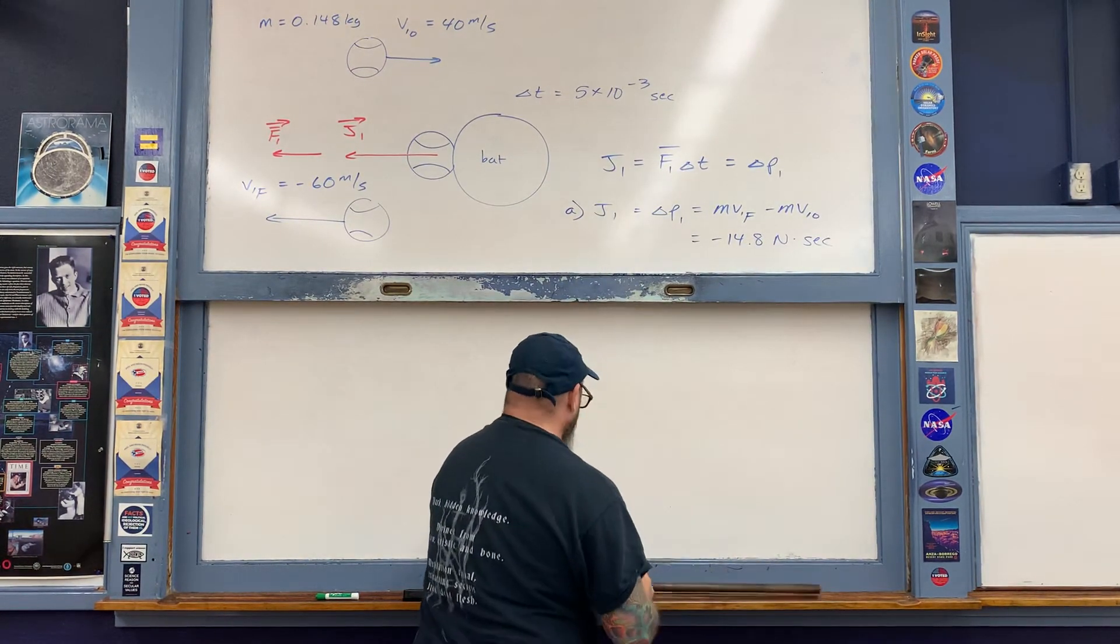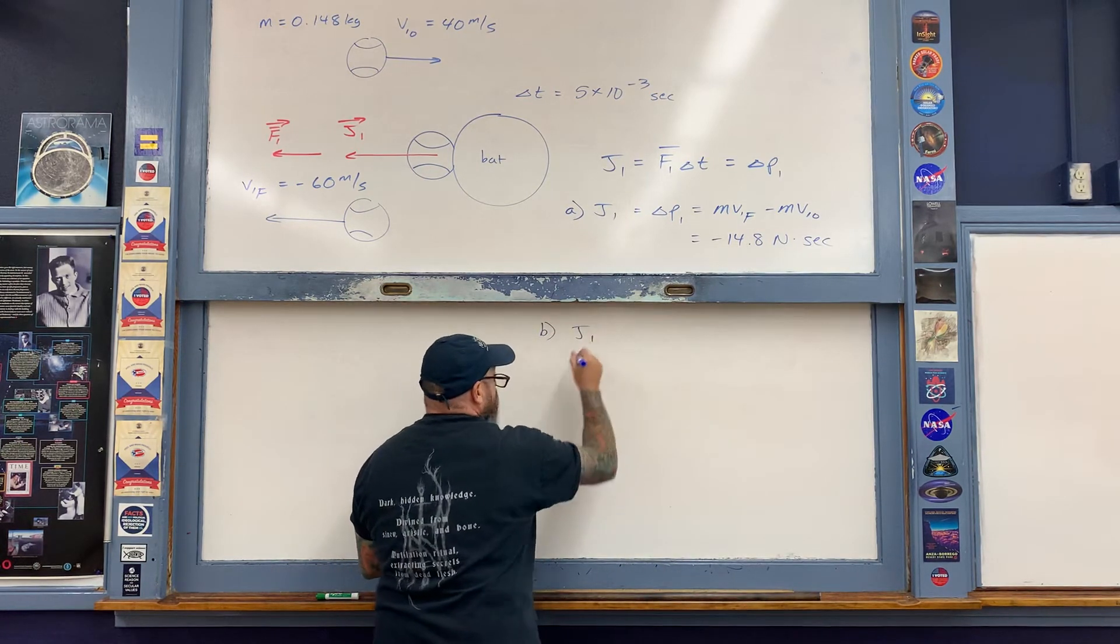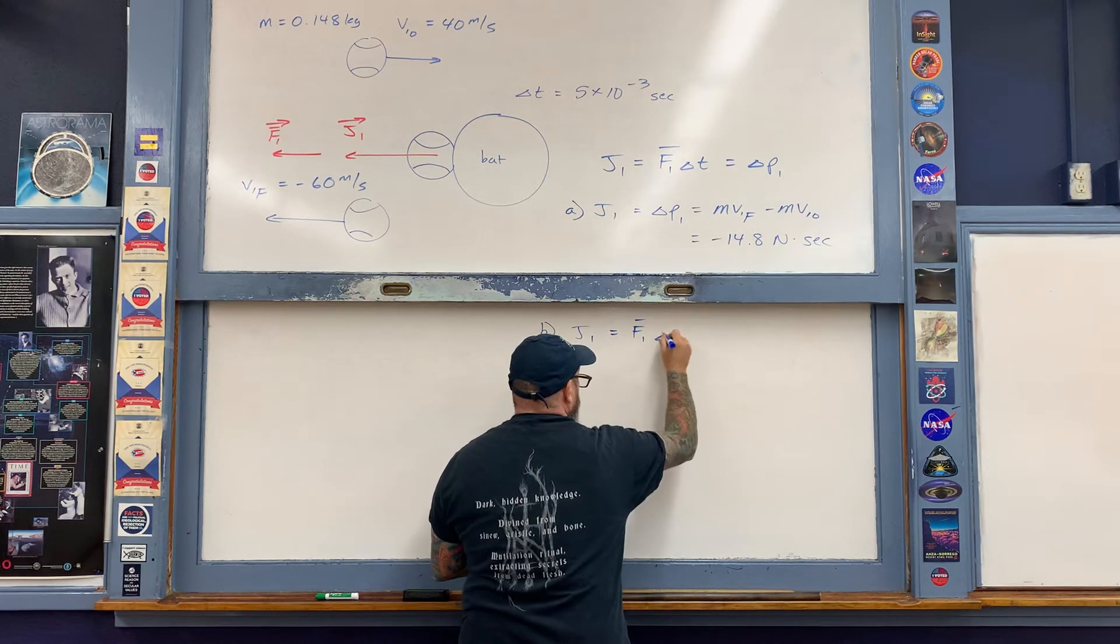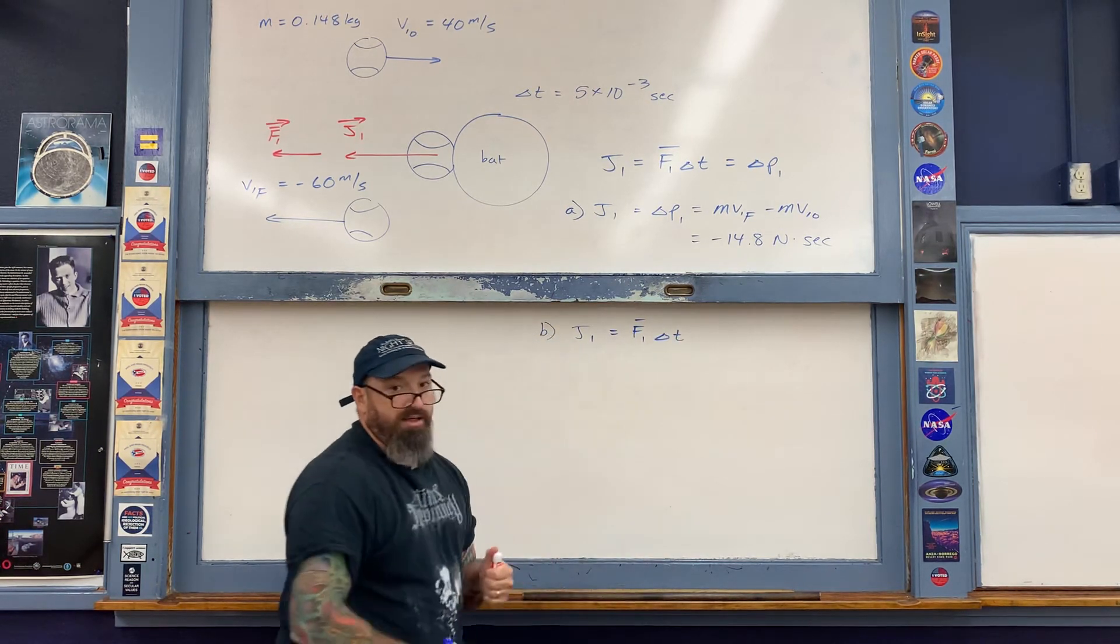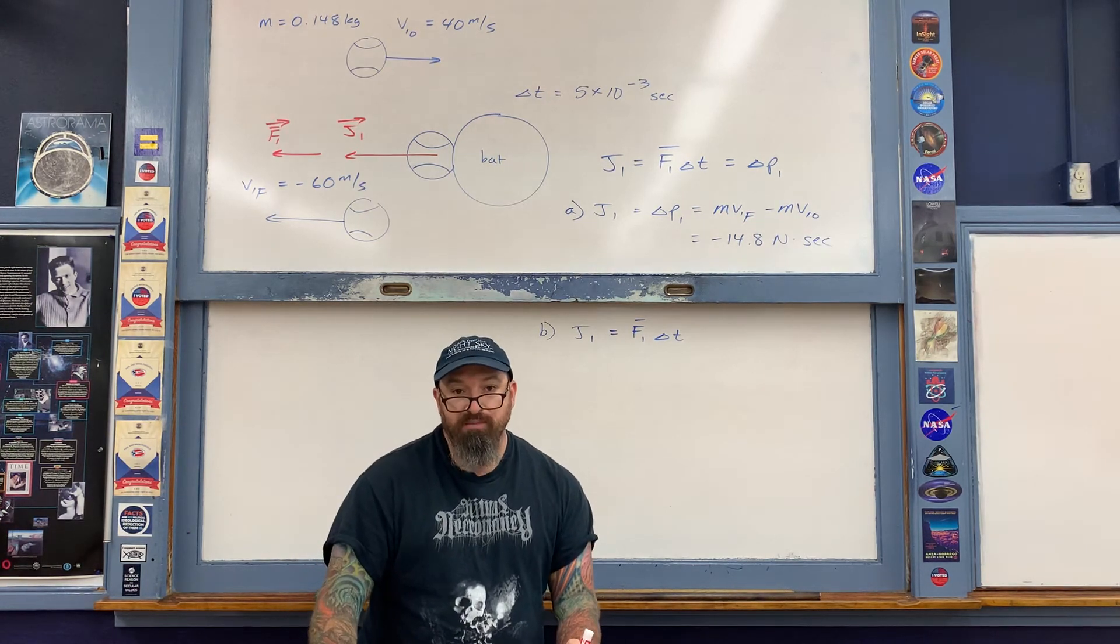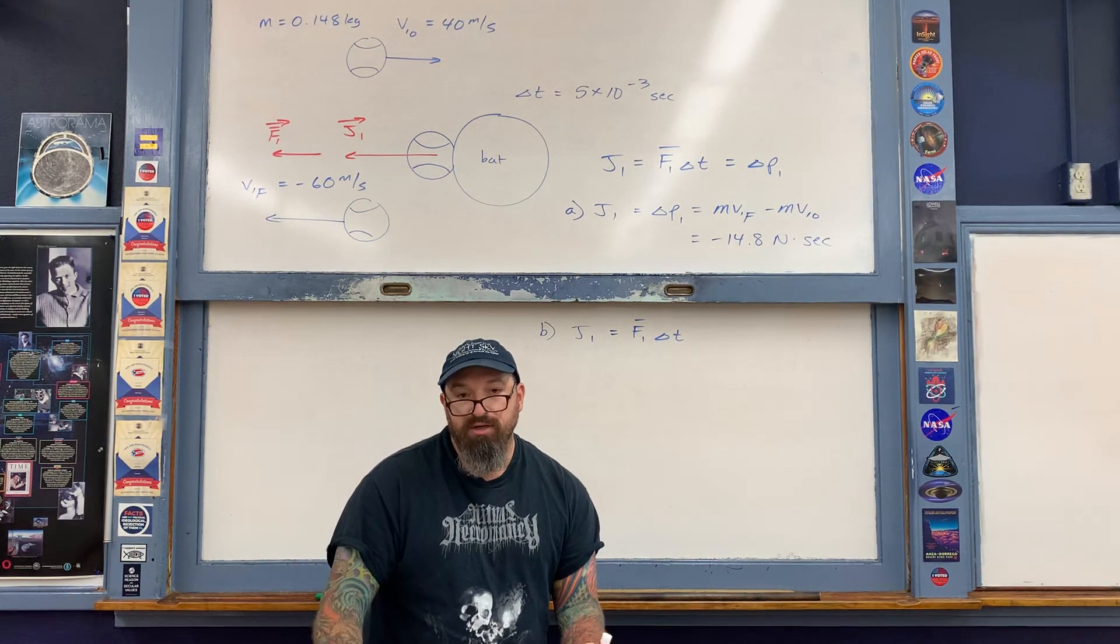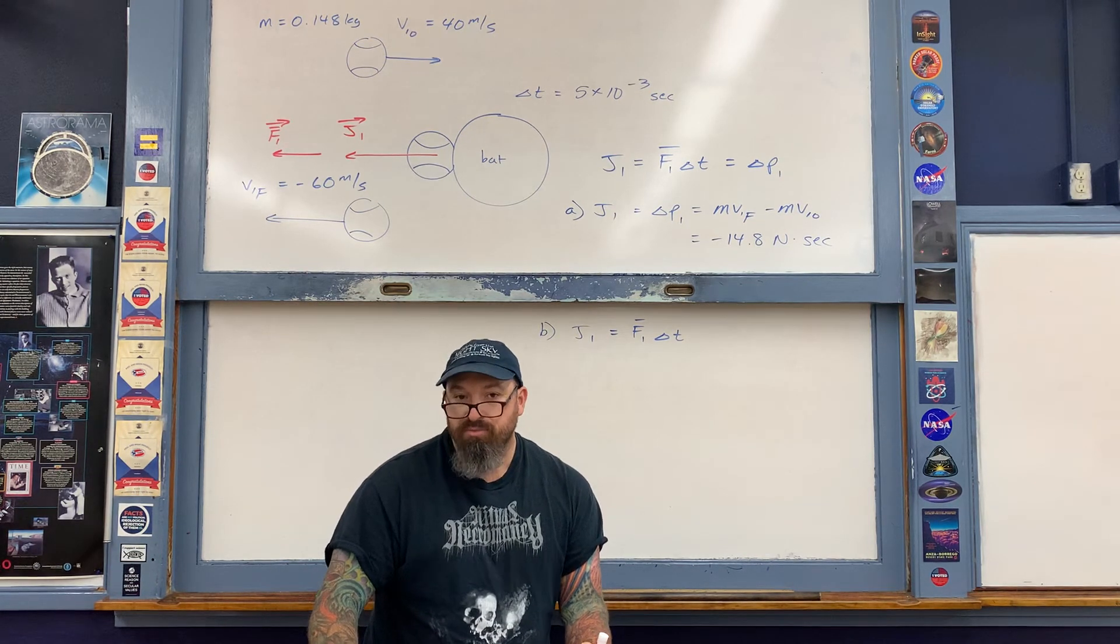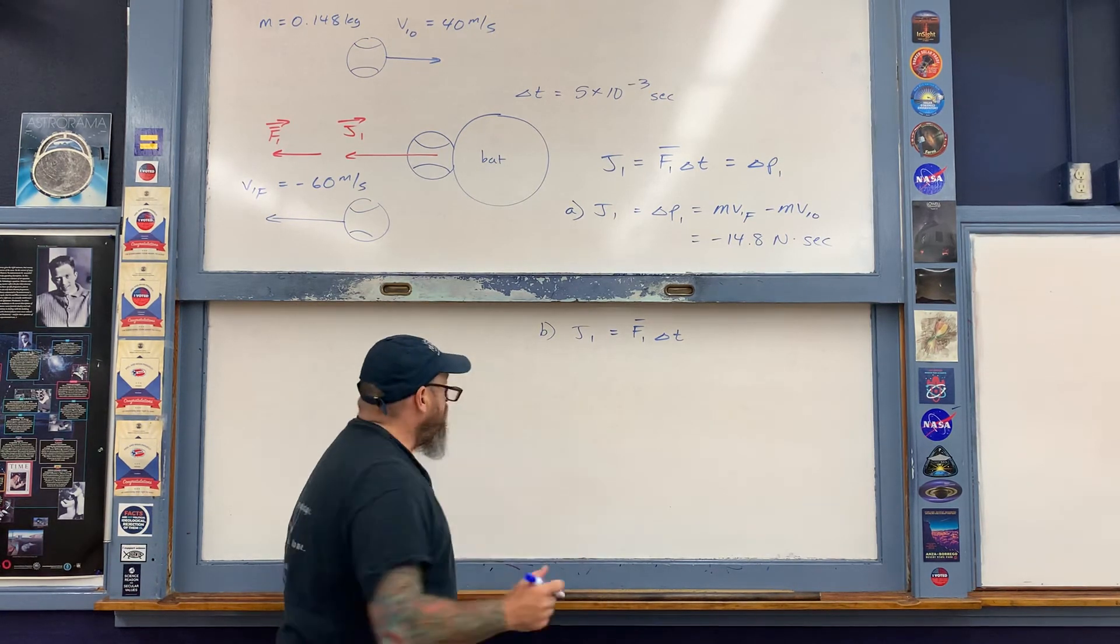In part B, we're using this portion of the expression. The impulse delivered to the ball equals the average force exerted on the ball multiplied by Δt. To calculate the force, you have to measure the time interval over which the collision occurs. Realistically, the only way to do that is by using high-speed photography.